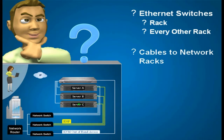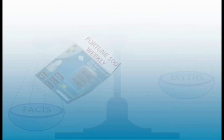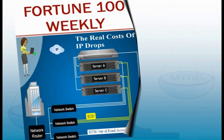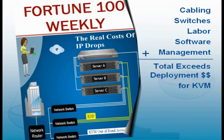Since you'll have hundreds or thousands of these ESPs that you might need to access, you'll need to assign and manage all those IP addresses. Even more expensive is the need for software packages to manage quick access to all those connections. There are Fortune 100 IT companies that place the cost of a drop at more than $600, including just cabling, switches, and labor, but not factoring in software and management overhead. The total ESP costs can match or even exceed costs for deploying and using a KVM switch network.